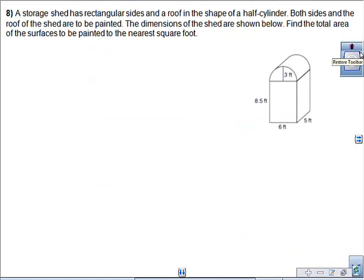We're picking up here on question number eight. It says that you have a storage shed with rectangular sides and a roof in the shape of a half cylinder. Both sides and the roof of the shed are to be painted. The dimensions of the shed are shown below. Find the total area of the surfaces to be painted to the nearest square foot.